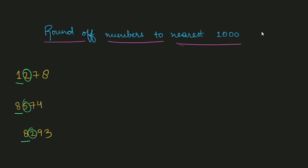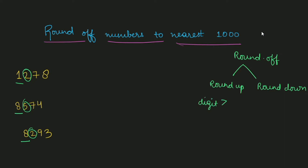Again, I will write the rule here. In round off we basically do it two ways: either we round up or we round down. In round up, if the digit is greater than or equal to 5, we round up. In round down, if the digit is smaller than 5, we round down. In round up you add 1 to the underlined digit — that is, the number to which you want to round off.